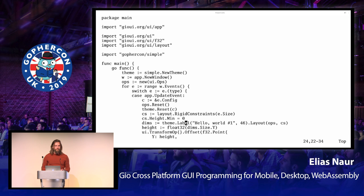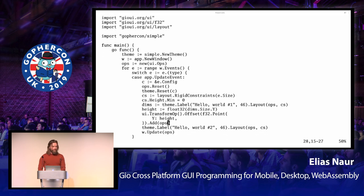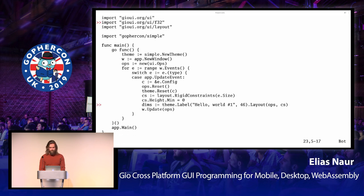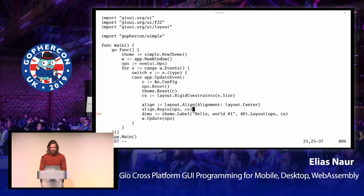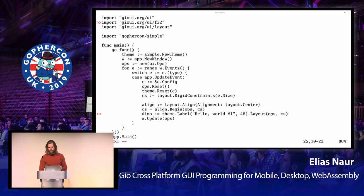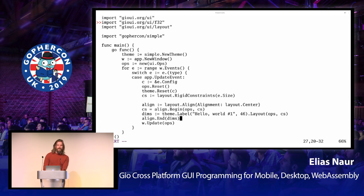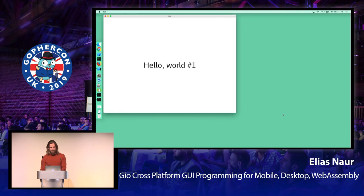Doing manual offsetting is tedious and error-prone, so instead you use layout helpers available in the GU library. One of those helpers is alignment. You initialize it with a direction — one of the compass directions or simply centering. You give it the original constraints and get back a modified set of constraints to give the widget you want centered. Finally, you end it by giving the alignment operator the dimensions of the widget so it knows how much to offset it to actually center it.